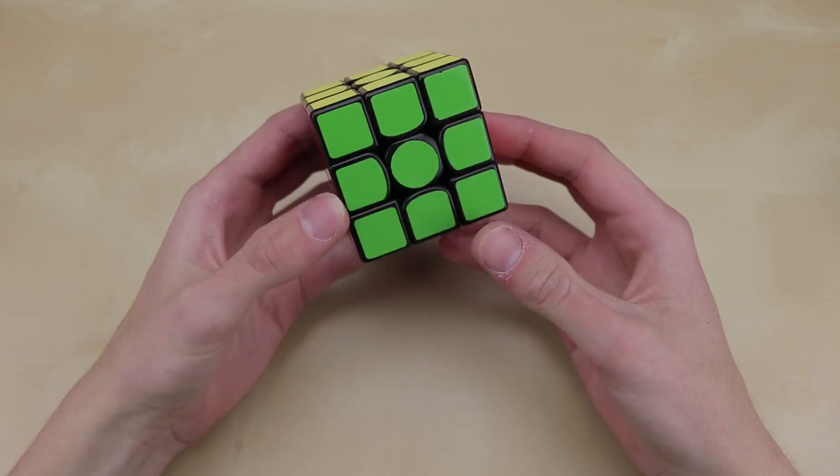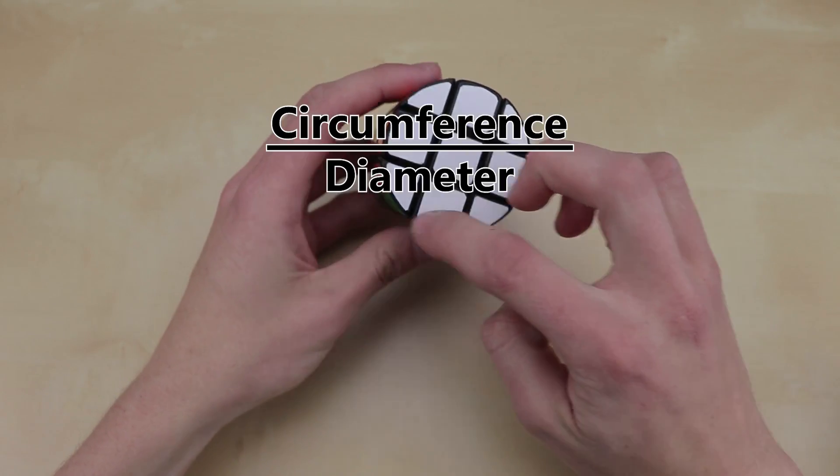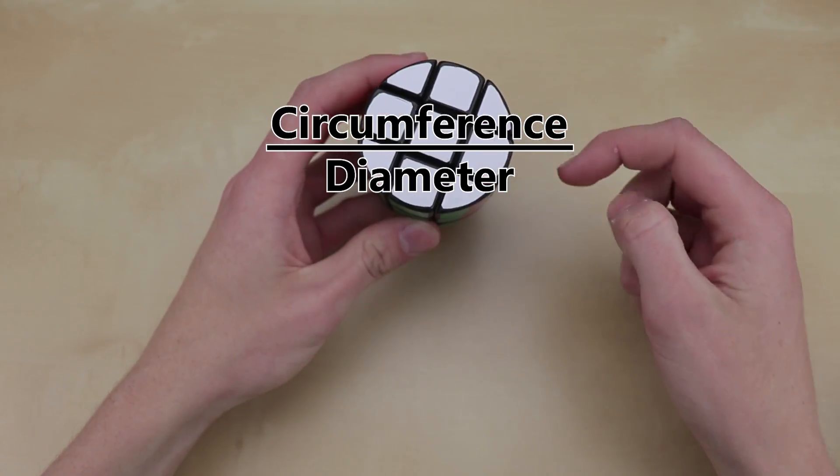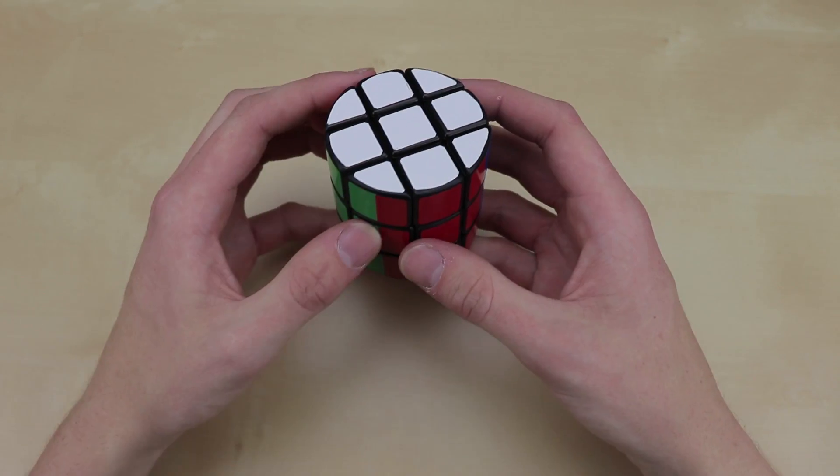Now if you don't know what Pi is, well I'm not going to explain it, so go ahead and look it up. But most simply, it's the ratio between the circumference and the diameter of a circle, so you divide the outer part of a circle by the distance across, and that's Pi.